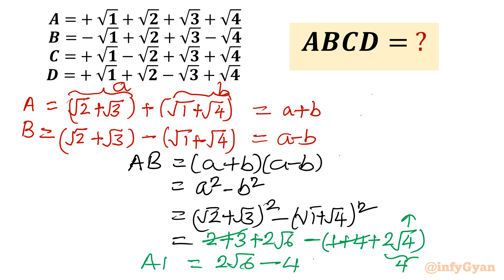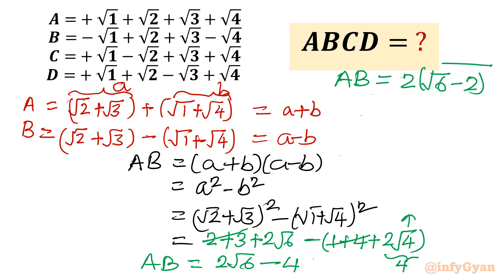This is our AB. If I take 2 common, then AB will be equal to 2 times the quantity root 6 minus 2. This is our A and B.